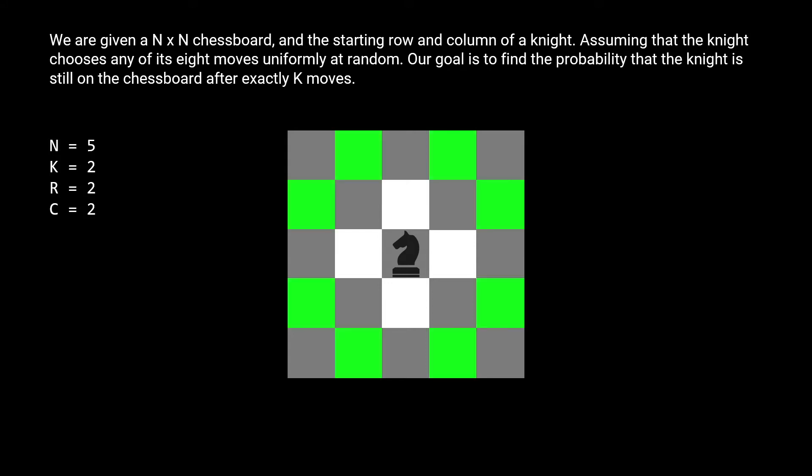For the first move, the knight can move to any of the positions I've highlighted green. Since we weigh each of the eight moves equally with probability, each square has a one-eighth probability that we land on it. Now since k is 2, we have to simulate this one more time.